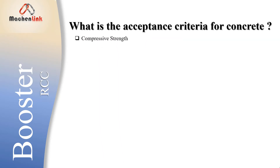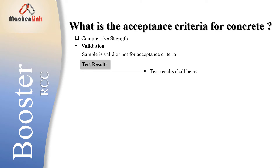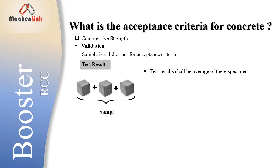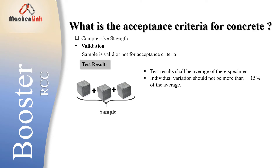Before preparing test results for acceptance criteria, we have to check the validation — we have to check that the sample is valid or not for acceptance criteria. IS code says that test results shall be the average of three specimens, and individual variation should not be more than 15% of the average.